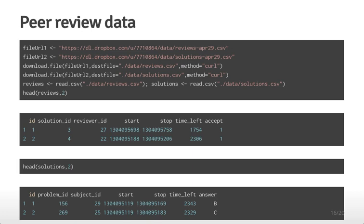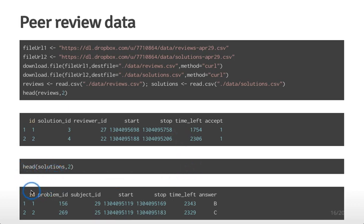We need to download two data sets from Dropbox. We assign the two URLs and download both files using the same methodology as before, then read them in using read.csv since they're both CSV files. Looking at the top of the reviews file with head(), we see it has an ID, solution ID, reviewer ID, start and stop time, and so forth — all quantitative variables. The solutions file has an ID, a problem ID, and similar variables.